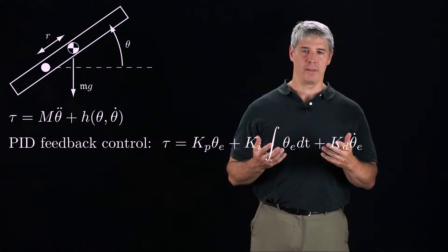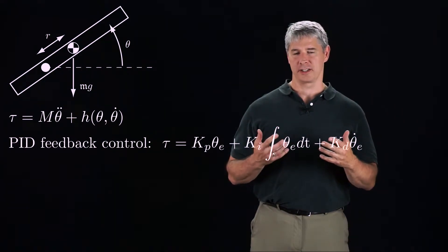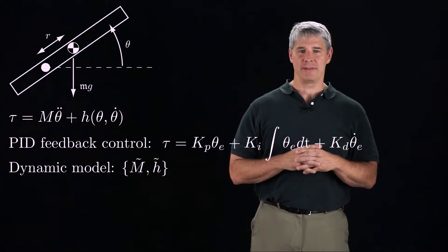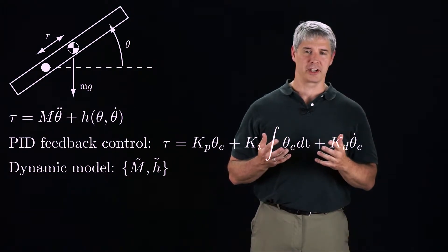If we have a good dynamic model of the robot, there's no need to wait for error to start commanding a torque. Our dynamic model is M tilde and H tilde, based on estimates of the inertia of the robot, the gravitational term, and friction.